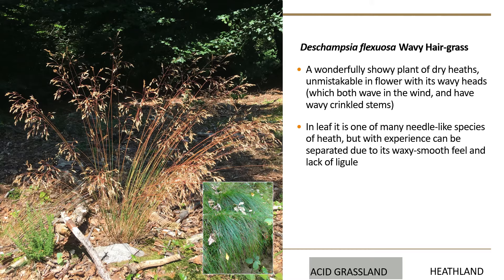The next species is wavy hair grass. In flower it's pretty unmistakable — it has absolutely beautiful, very delicate heads. If you're familiar with tufted hair grass, you'll recognise the similarity of those very showy heads. With wavy hair grass the heads wave around in the wind, and if you look just beneath where the flowers are, you can see wibbly-wobbly stems. I'm not sure if it's named 'wavy' because of those stem waves or because the whole thing waves in the wind — but actually it does both.